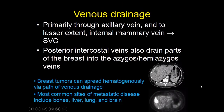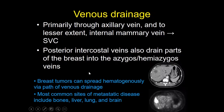For venous drainage, primarily most drainage is through the axillary vein, but some goes through the internal mammary vein, both of which eventually drain into the superior vena cava. There is also some drainage to the posterior intercostal veins into the azygous and hemi-azygous system. The venous drainage is important because this is one way that breast tumors can spread hematogenously to other parts of the body — predominantly the bones, liver, lung, and brain — such as here in this patient who has a liver metastasis.